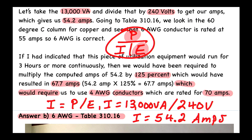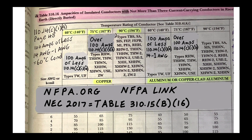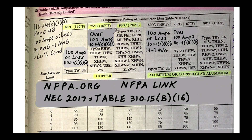Now looking at Table 310.16 in the 2020 code book, we need an ampacity in the 60°C copper column of at least 54.2 amps. The 6 AWG conductor is rated at 55 amps, which meets our requirement. That gives us our answer to this question.